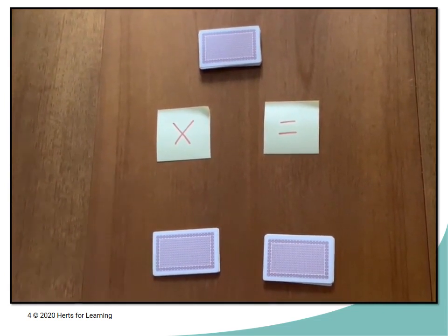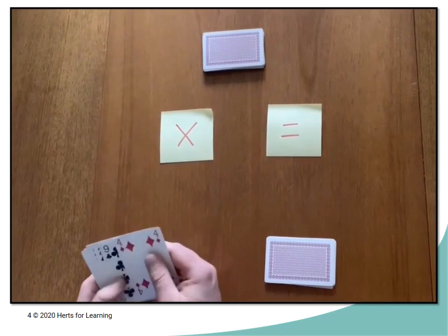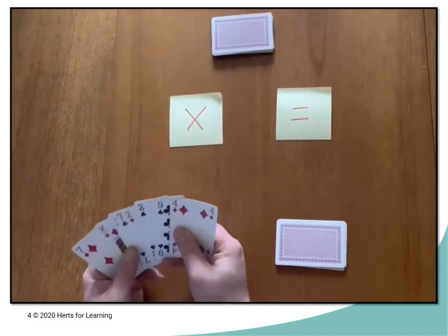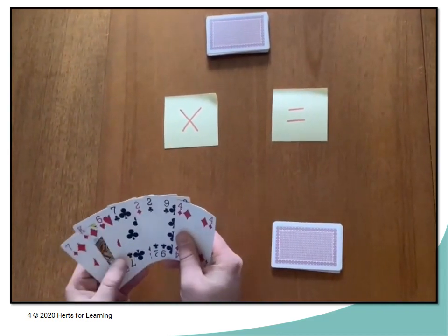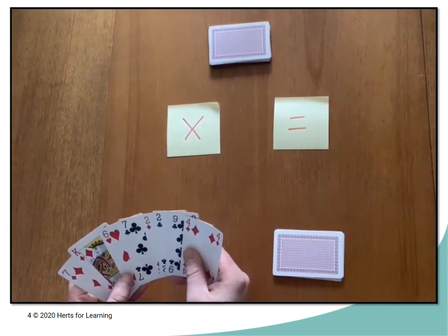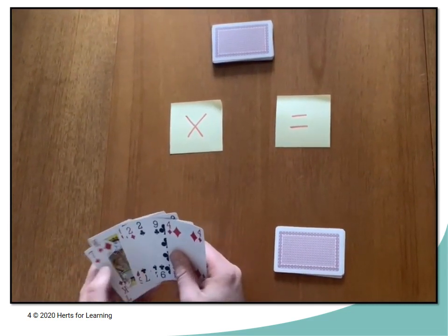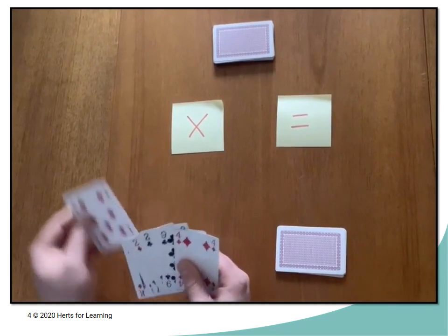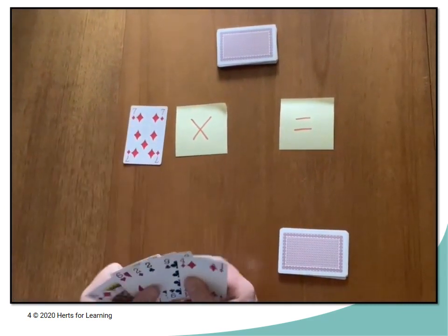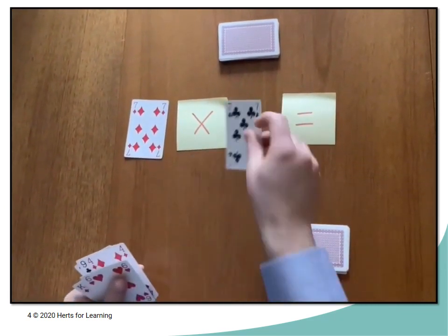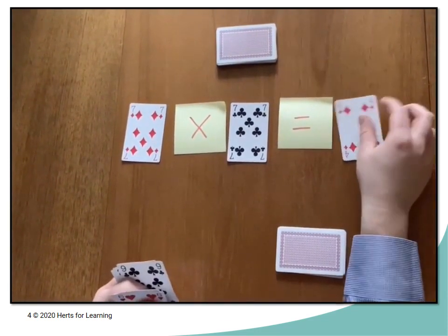So player 1 is going to go first and they need to look at their cards and create a multiplication number sentence. So 1 digit multiplied by 1 digit is equal to a 2 digit product. So we've got 7 lots of 7 is equal to 49.